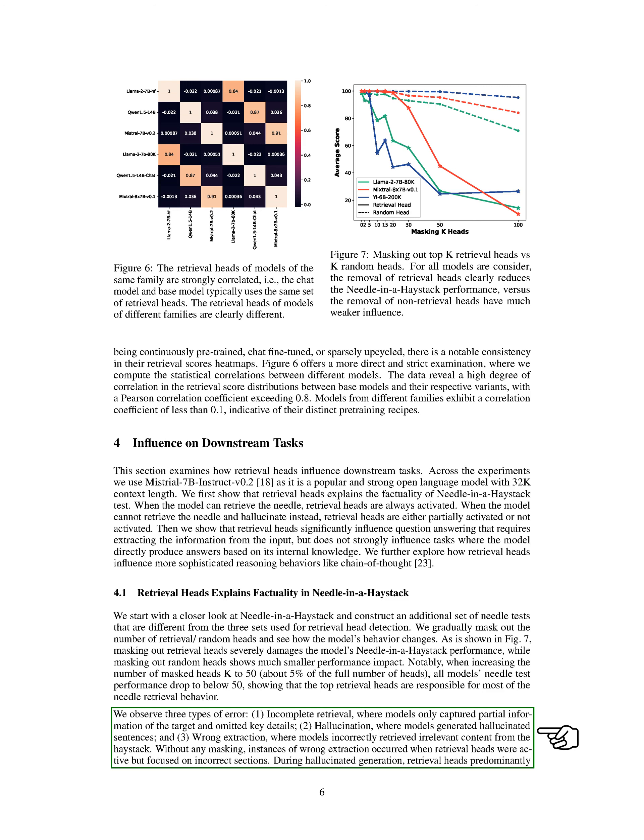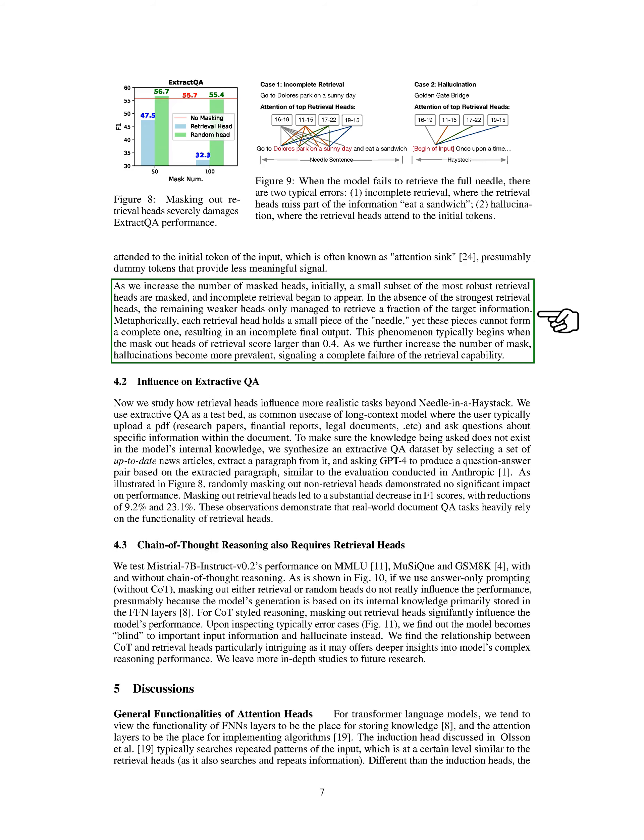We identified three types of errors that occur when retrieval heads are masked: incomplete retrieval, hallucination, and wrong extraction. Incomplete retrieval occurs when the model only captures partial information, while hallucination involves the generation of false sentences. Wrong extraction happens when irrelevant content is retrieved from the haystack. As we increase the number of masked heads, incomplete retrieval and hallucinations become more prevalent, ultimately leading to a failure in retrieval capability.